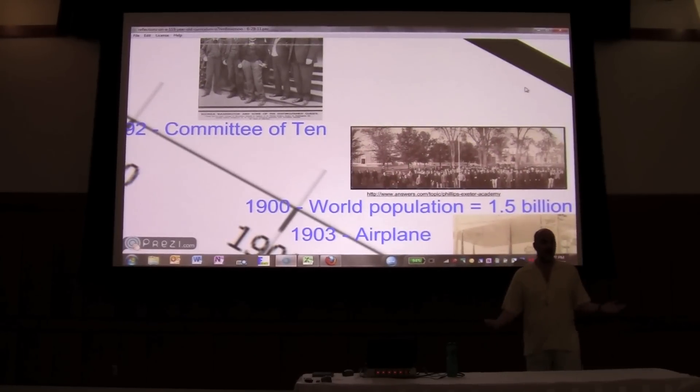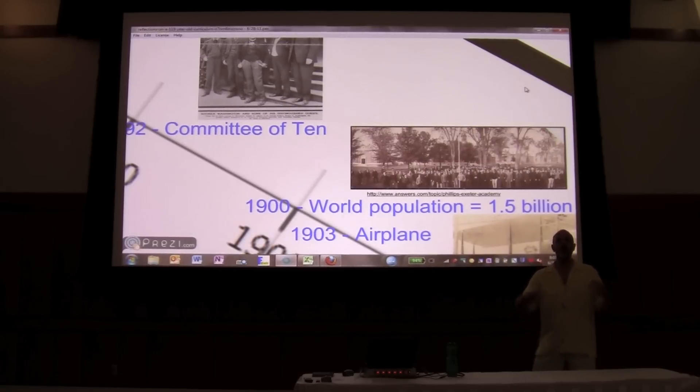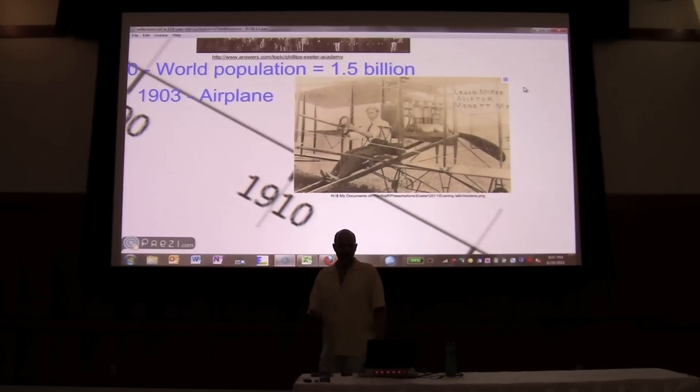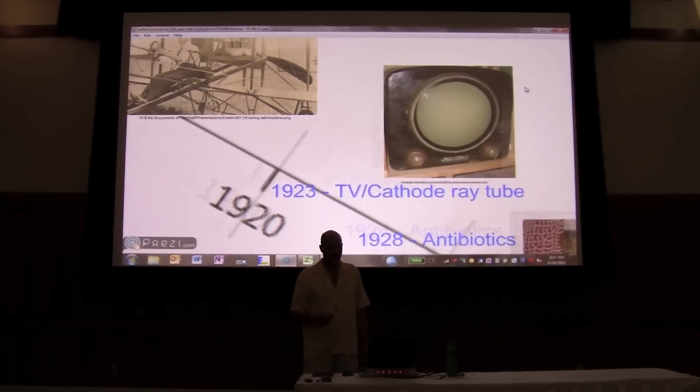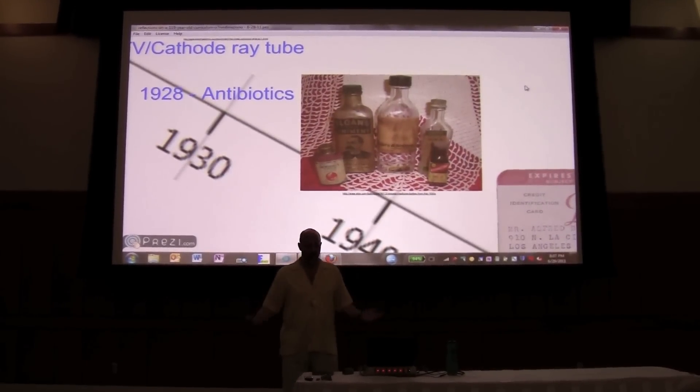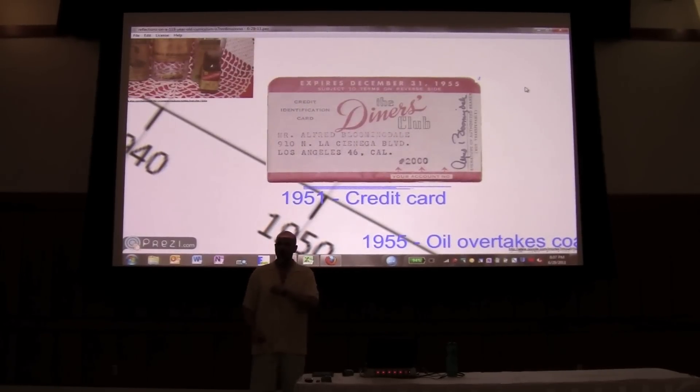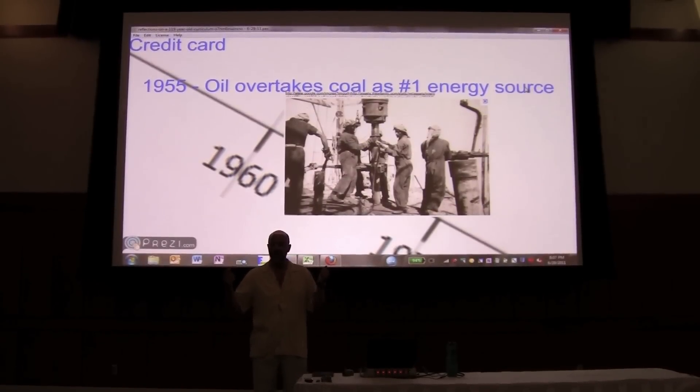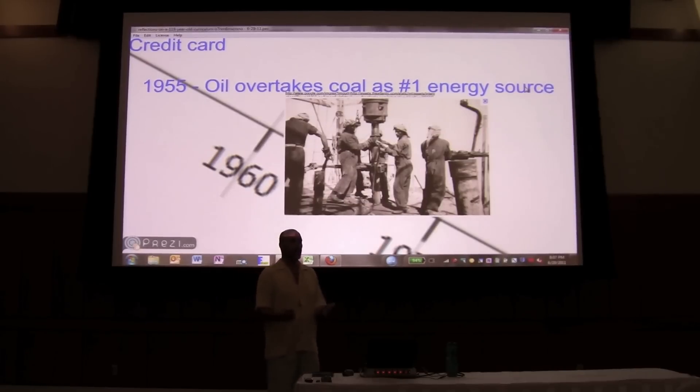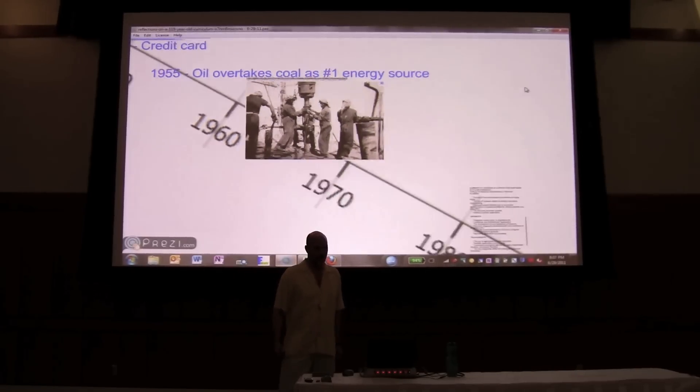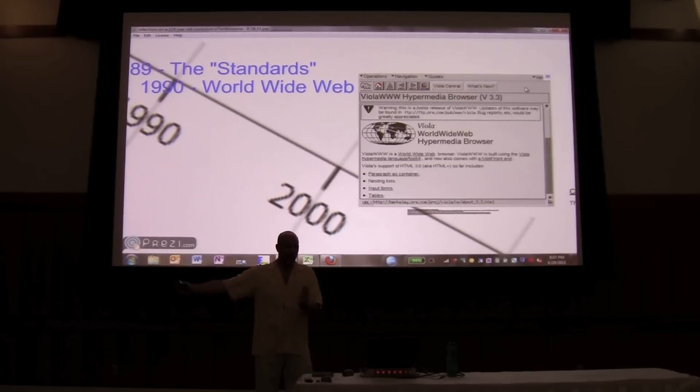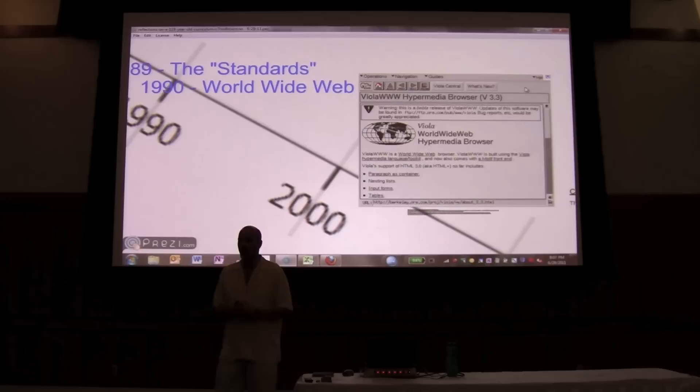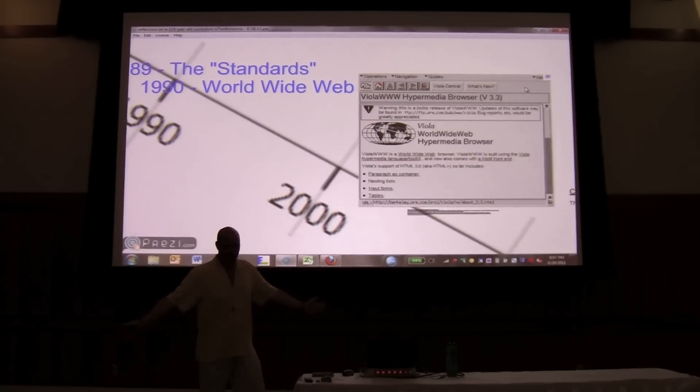For instance, the population has grown from 1.5 million to 7 million. That's had huge implications for us as people. Since then, we've had mass transportation, mass communication. Medicine is drastically different. In 1951 came the first credit card. The way we purchase is drastically different. In 1955, oil overtook coal as the world's number one energy resource. A drastic change for us. And if you consider that through the last half of the 20th century computers, and then culminating in about 1990 with the World Wide Web, drastic changes for us.